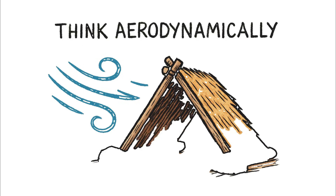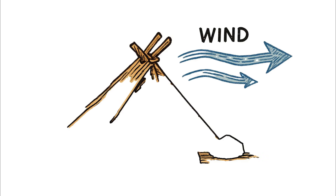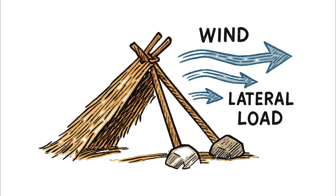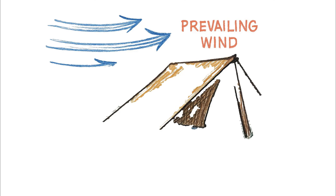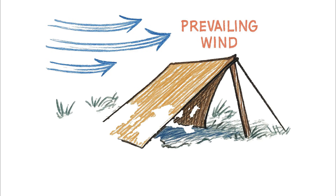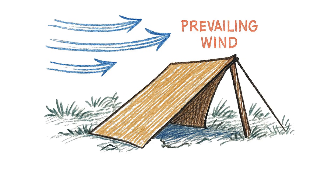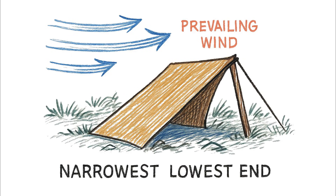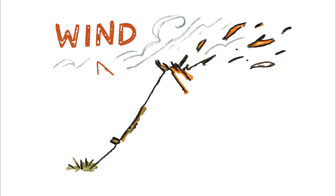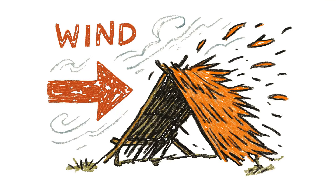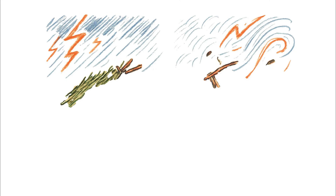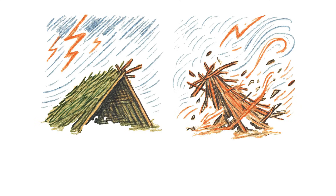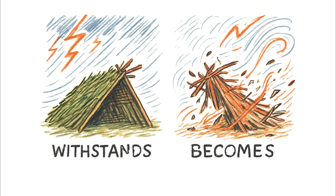But you also have to think aerodynamically. Wind is a dynamic, lateral load — meaning it pushes from the side. By orienting your shelter so its narrowest, lowest end faces the prevailing wind, you minimize its profile and reduce drag. This prevents the wind from catching a broadside and tearing the structure apart. It's the difference between a structure that withstands the storm and one that becomes part of it.